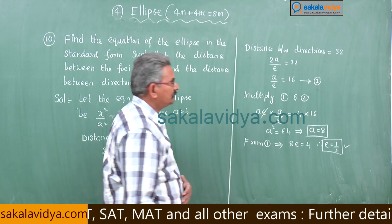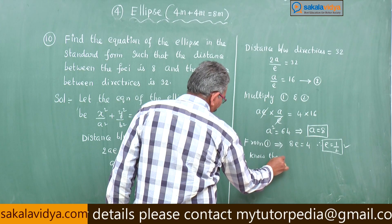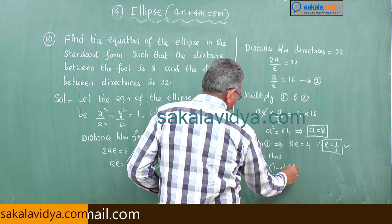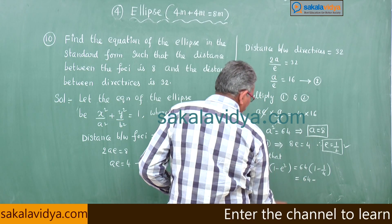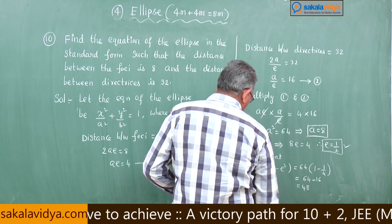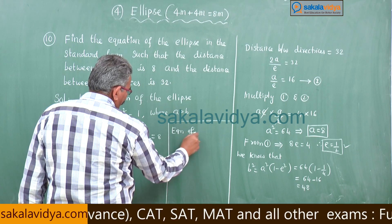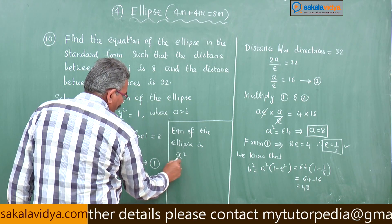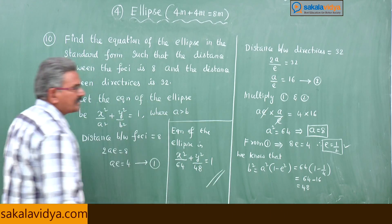Now e is known. We know that b squared equals a squared into 1 minus e squared. So b squared equals 64 into 1 minus 1 by 4, which gives 64 into 3 by 4, that is 48. Therefore the equation of the ellipse is x squared by 64 plus y squared by 48 equals 1. This is the answer. Thank you.